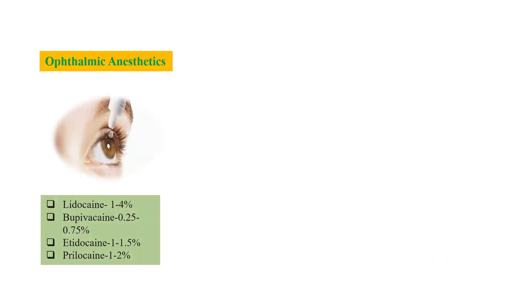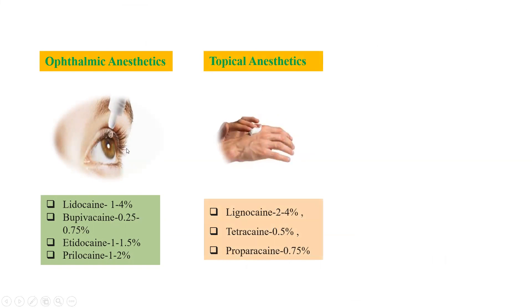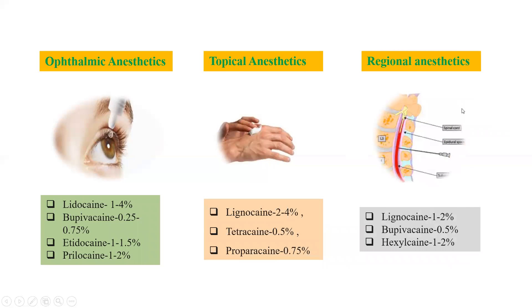There are several types of local anesthetics. First is ophthalmic anesthetics, which are applied on the surface of the eye for glaucoma or conjunctivitis purposes. The drugs include lidocaine, bupivacaine, etidocaine, and prilocaine. Then there are topical anesthetics applied on the surface of the skin, such as lignocaine, tetracaine, and propitocaine. Third is regional anesthetics, which are injected into a particular region inside the body — examples are lignocaine, bupivacaine, and hexylcaine.